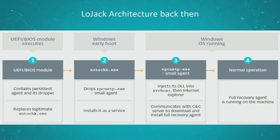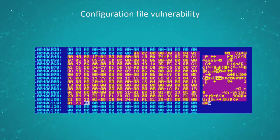The last step, which is the fourth one, is normal operation — the recovery agent is running on the system and you have the means to locate and recover the laptop. You might wonder how the small agent is actually trying to reach out to the server — how can it know the distant server domain name or IP address? Well, it has a configuration file embedded in its code.